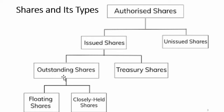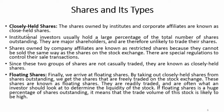Outstanding shares — which are currently held by shareholders — can be held in two types: floating shares and closely held shares. Closely held shares are those held by close affiliates or corporate insiders. These shareholders hold a large number of shares but do not trade them. They are major shareholders. They are legally bound by restrictions and cannot freely trade them the same way as on the stock exchange.